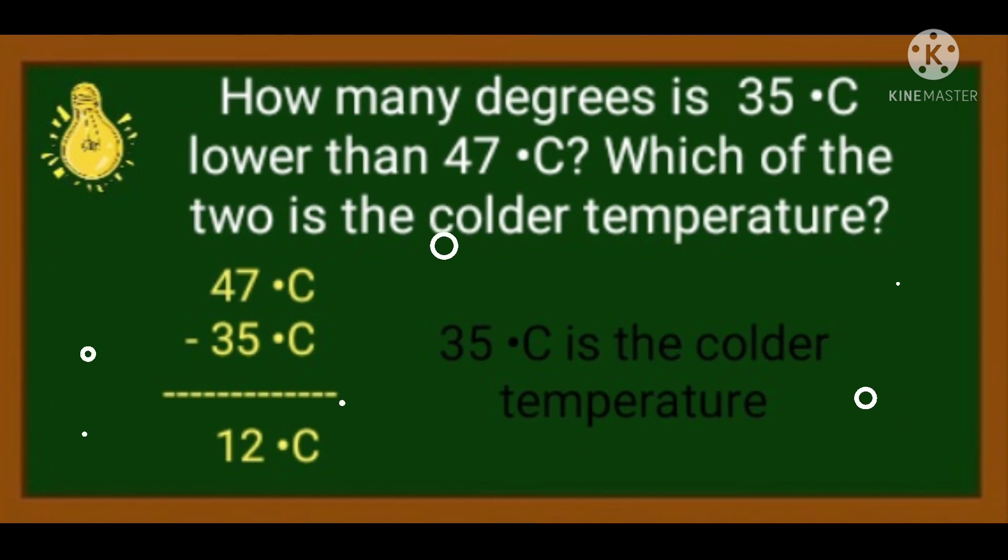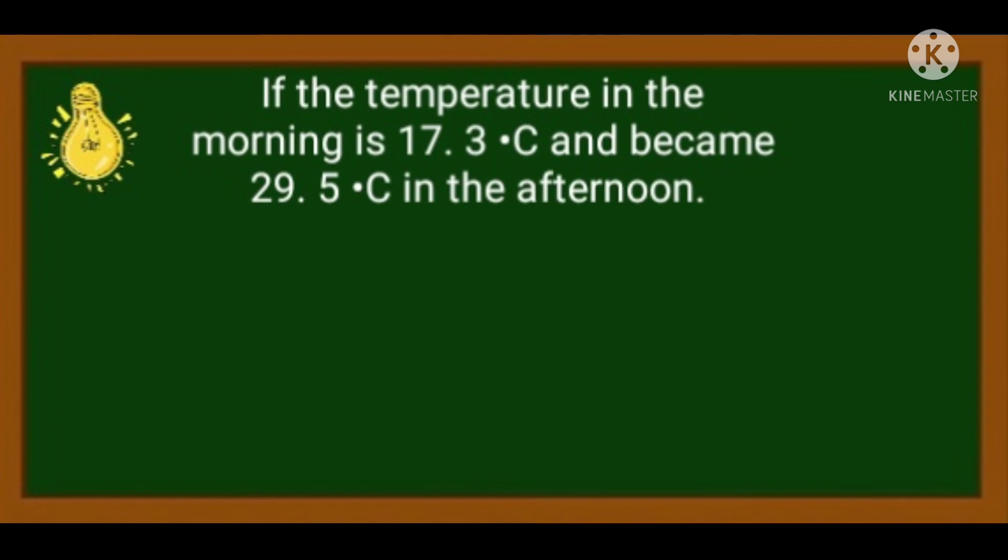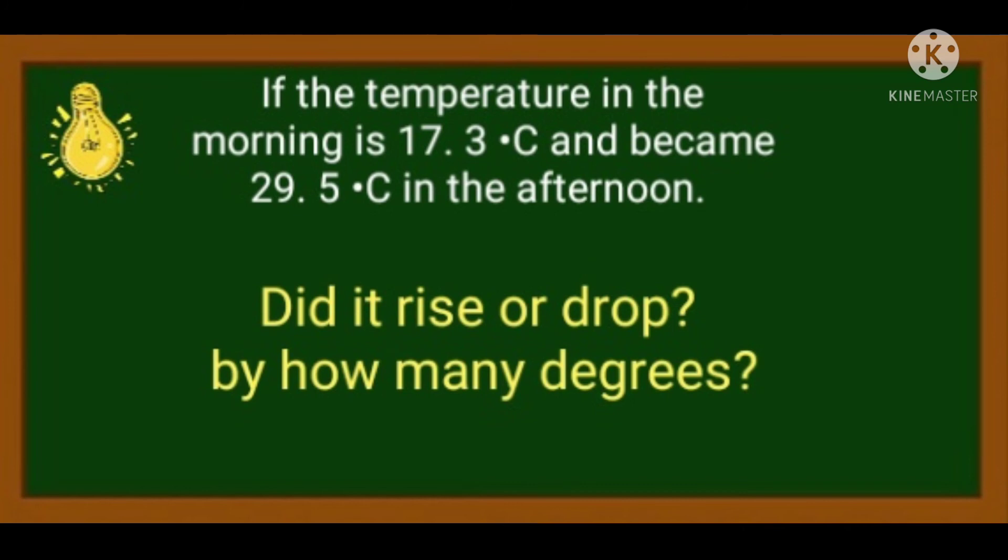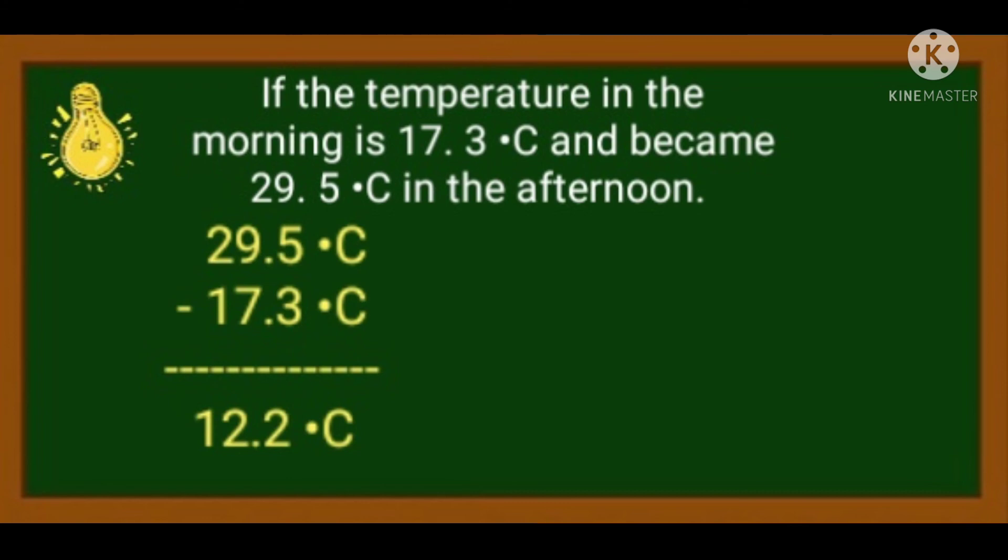Okay? Let's try now problem number 4. So, if the temperature in the morning is 17.3 degrees Celsius and became 29.5 degrees Celsius in the afternoon, did it rise or drop? By how many degrees? So, anong gagawin natin? We're going to subtract 17.3 degrees Celsius from 29.5 degrees and it gives us 12.2 degrees Celsius. So, the temperature rose by 12.2 degrees Celsius. Tumaas po siya kasi lalo siyang uminit. To check if the answer is correct, add 12.2 degrees Celsius plus 17.3 degrees Celsius, it gives us 29.5 degrees Celsius. Kaya, tama po ang ating sagot.